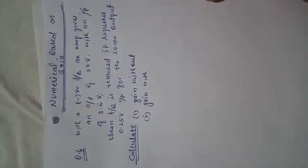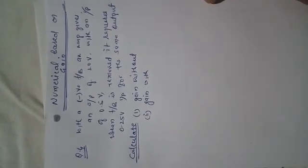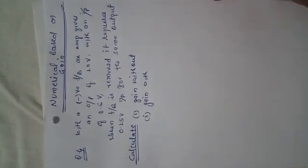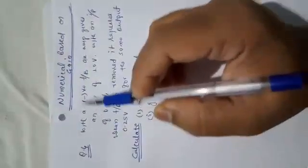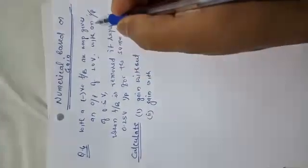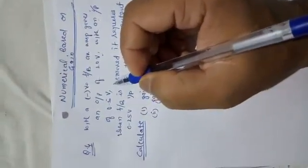Okay students, some students have doubts on question number four, a numerical problem based on gain. The question is: with negative feedback, an amplifier gives an output of 10 volts with an input of 0.5 volts.